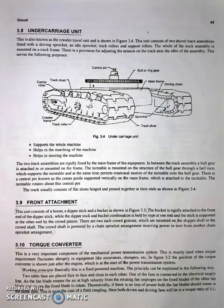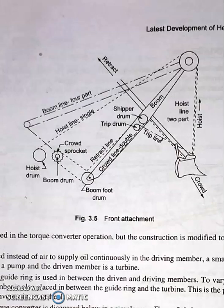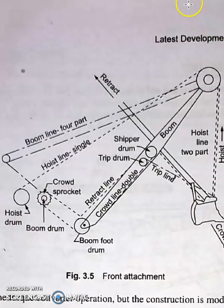The next one is front attachment. This unit consists of a boom, a dipper stick, and a bucket. The bucket is rigidly attached to the front end of the dipper stick. While the dipper stick and the bucket combination is held by rope at one end, the stick is supported at the other end by the crowd pinion.